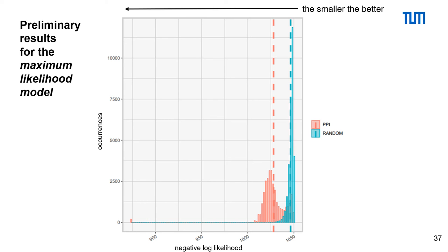In this plot, you can see the negative log-likelihood score of the model on the x-axis and the occurrence of this score on the y-axis. The scores of the PPI-based SNP-SNP interaction network are more on the left side of the plot than the scores of the random network. Since we are talking about negative log-likelihood, a smaller score means more variation can be explained — so the left side of the plot is better.